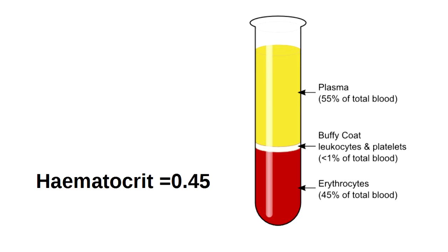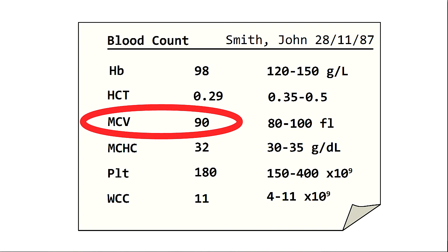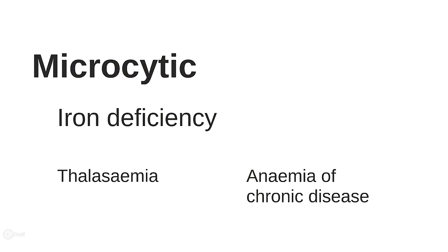If red blood cells make up, for example, 45% of the volume, the hematocrit would be 0.45. A useful clue to the cause of anemia is the mean cell volume, or MCV. Anemia with a low MCV is microcytic, normal MCV is normocytic, and high MCV is macrocytic.